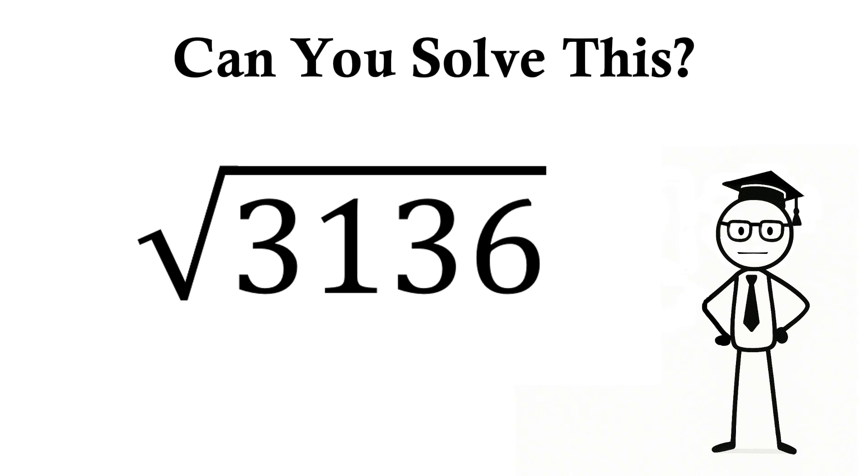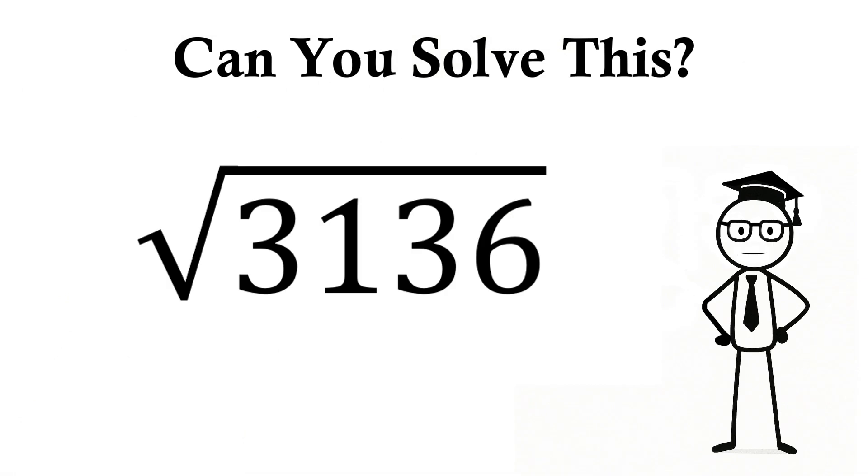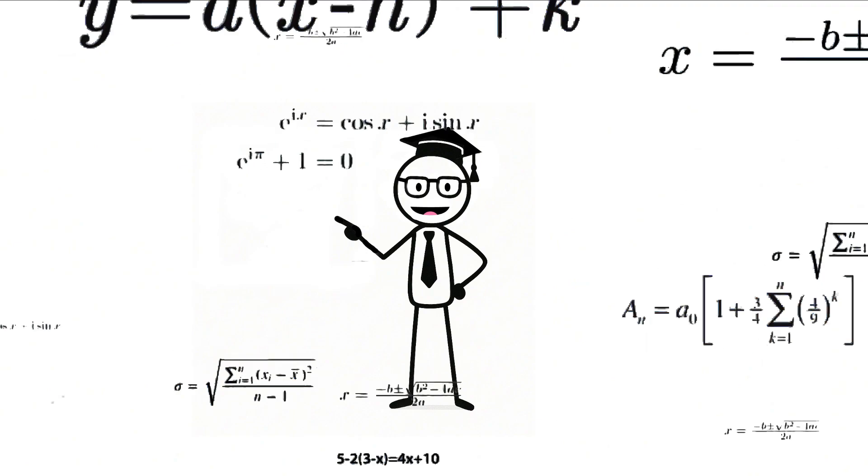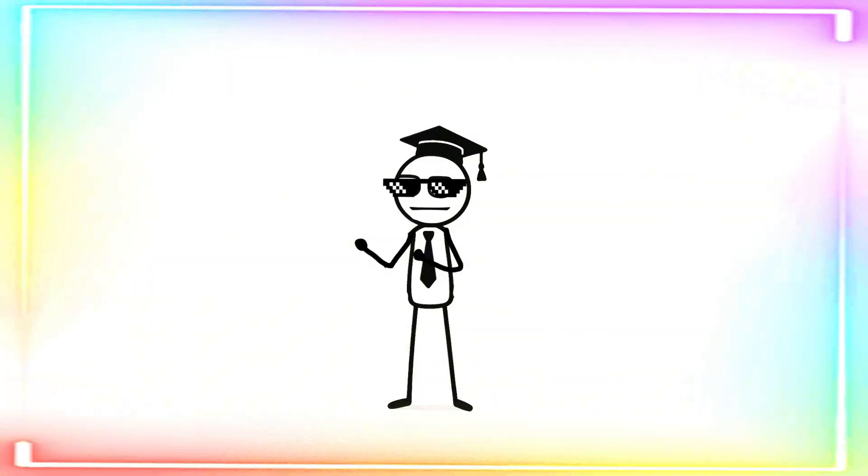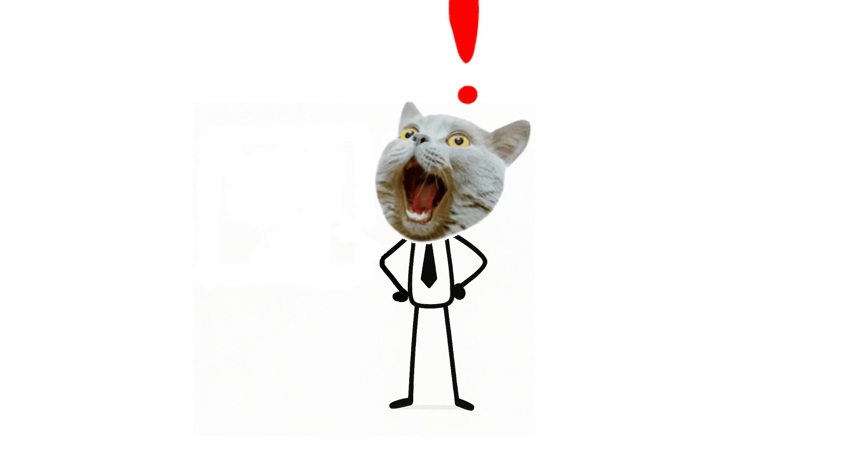Can you solve this in just 3 seconds? What's the square root of 3136? Think fast! What if I told you, you could mentally find the square root of any perfect square in seconds? Like it's a party trick! Stick around, because I'm about to blow your mind.